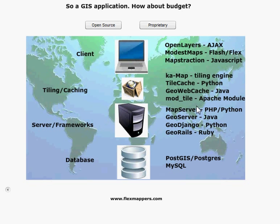From the server end, we've got MapServer, which is PHP/Python based. GeoServer, which is a Java-based option. GeoDjango, which is Python and more of a framework. And GeoRails, which is like Ruby on Rails but for geo applications. The popular ones are MapServer and GeoServer — I usually lean towards GeoServer. It requires an application server since it's Java-based, but it's a fully loaded geospatial server. It has GeoWebCache built in, so you've already got the caching option, and it has OpenLayers built in so you can view layers very quickly.